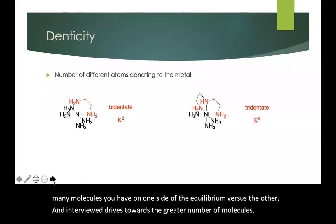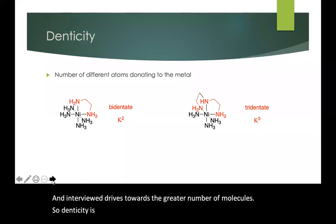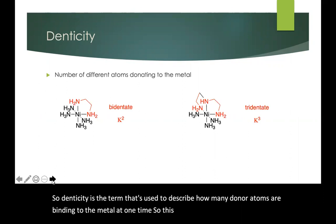So denticity is the term that's used to describe how many donor atoms are binding to the metal at one time. So this ethylenediamine ligand is a bidentate ligand. It binds through two nitrogens.